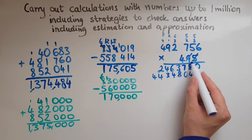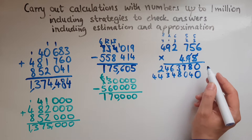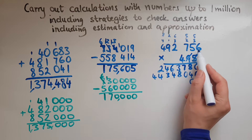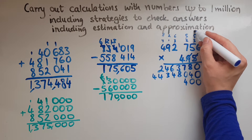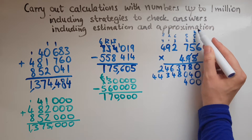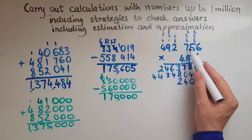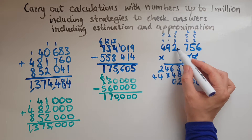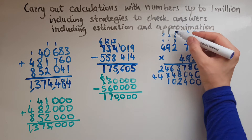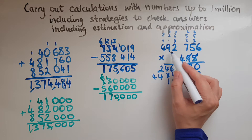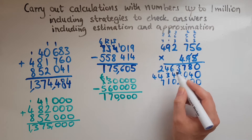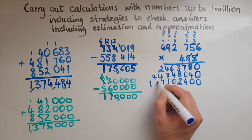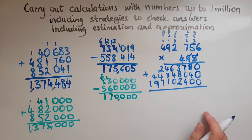Now we're looking at the 4, which has a value of 400 because it's in the hundreds place of 495. So this time we'll put two zeros underneath and treat this as the unit. 4 times 6 is 24 — so 4 down and 2 carried over. 4 times 5 is 20 and the 2 is 22 — so 2 and 2 carried over. 4 times 7 is 28 and the 2 is 30. 4 times 2 is 8 and the 3 is 11. 4 times 9 is 36 and the 1 is 37. 4 times 4 is 16 and the 3 is 19.